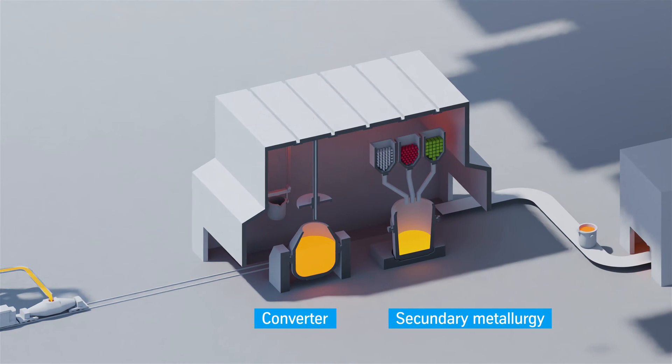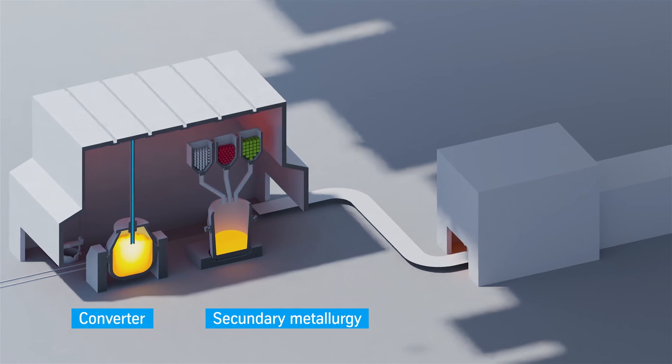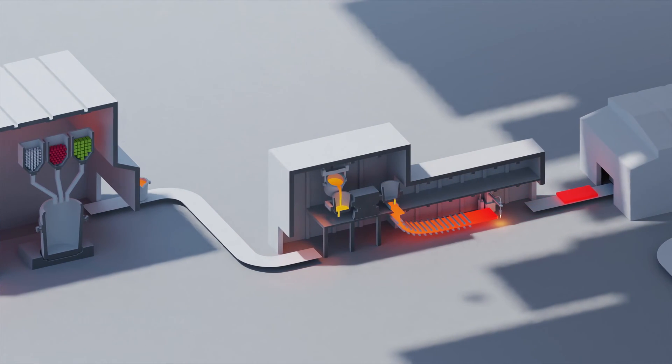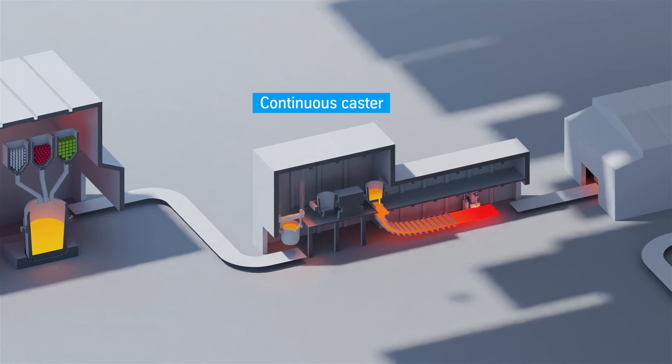Every year we develop new materials and research further applications of steel. How is molten steel turned into a sheet? This is where the continuous caster comes in, where slabs of different sizes are produced. Slabs are massive steel ingots which can be further processed at our production sites.